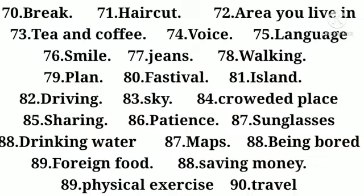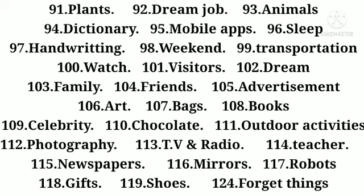Let's begin with topic 70 onwards: black, haircut, area you live in, tea and coffee, voice, language, smile, jeans, walking, plan, festival, Iceland, driving, sky, crowded place, sharing, patience, sunglasses, drinking water, maps, being bored, foreign food, saving money, physical exercise, and travel. These are important, so let's move on. Topic 91 is plants, dream job, animals, dictionary.